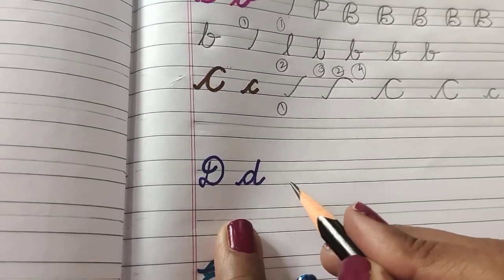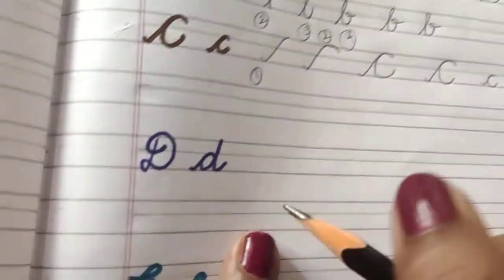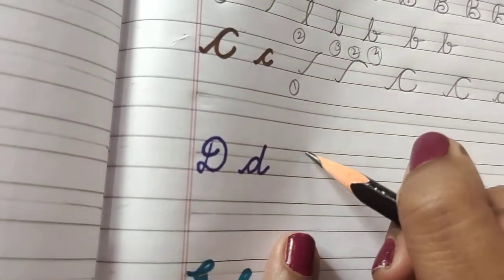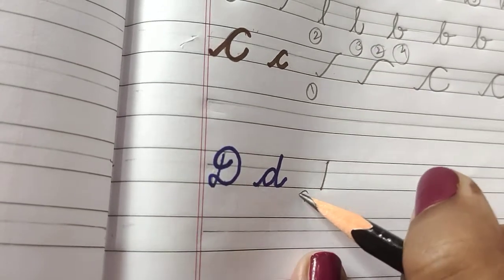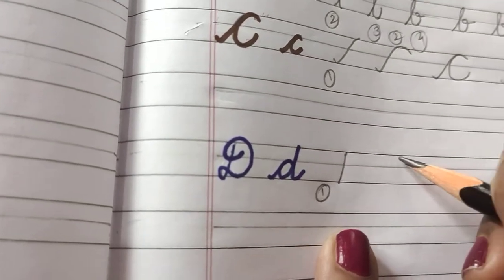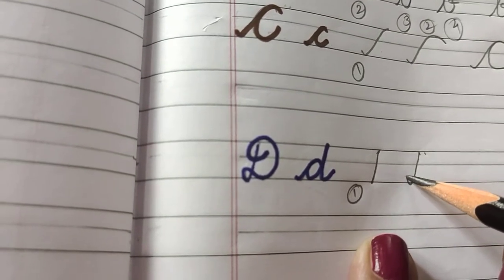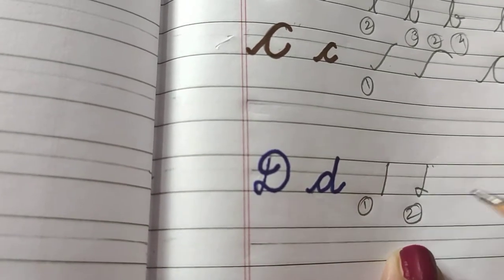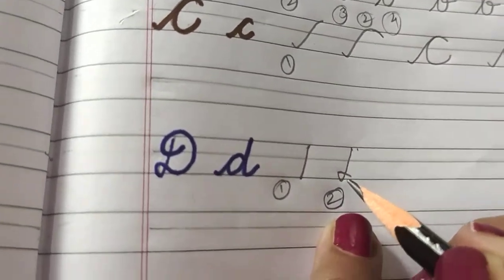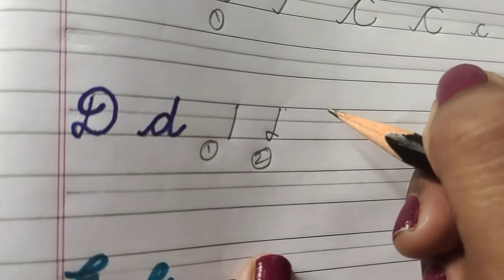Now letter D. Letter D is also a bit tricky. For this, a downstroke number one, a downstroke number two. Create a loop over here, so you can see this loop over here. Number three.